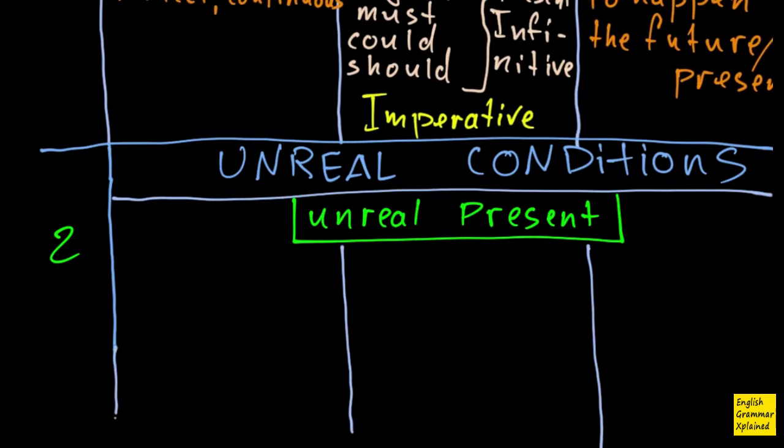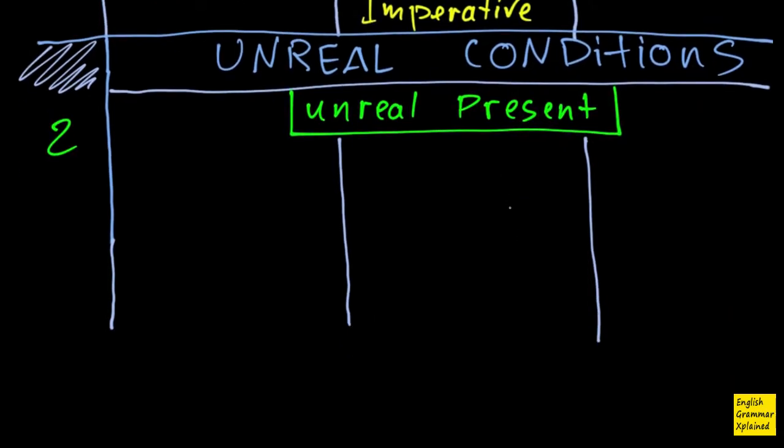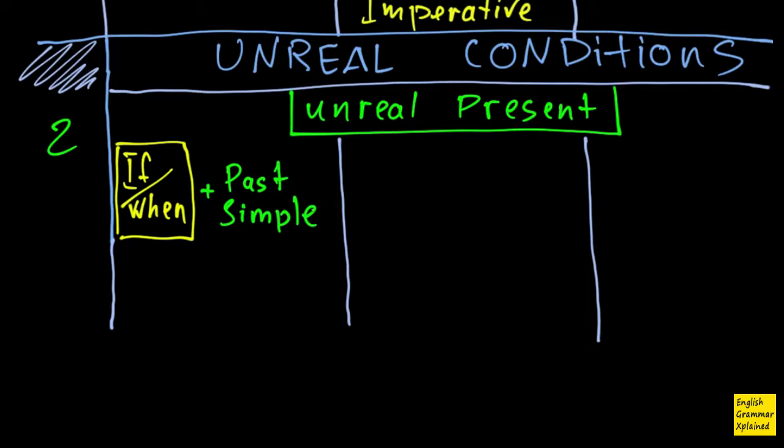And how can I make sentences with this unreal present thing? So in an if-clause, in an if-clause, I of course use if. I can use its alternative, its when. That's the beginning of my if-clause. And then I have to use past simple. Yes, here we talk about present, but we use past simple. That's very, very important to remember. Is there any alternative to past simple? Yes, it is, and it is past continuous.